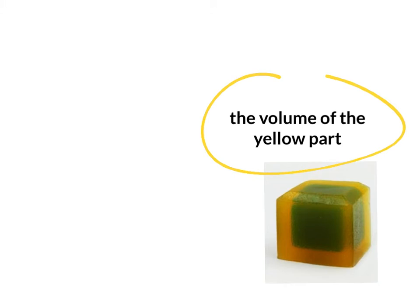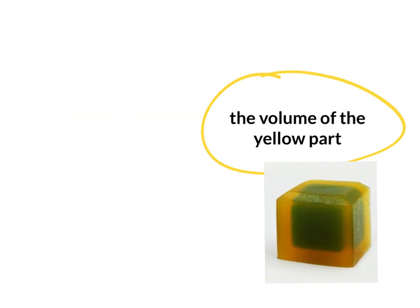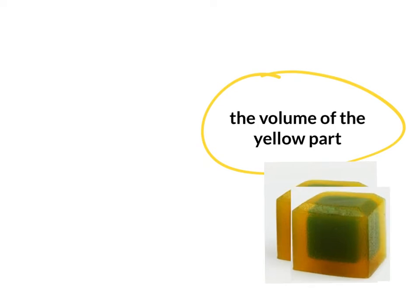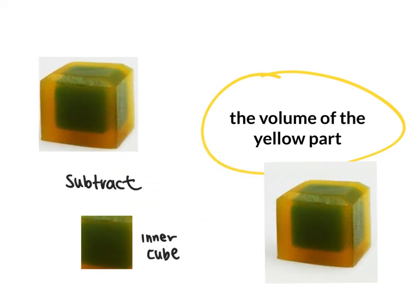To get only this yellow part, which is kind of like an empty picture frame without the picture, an easy way is to take this entire cube and subtract that inner piece so that you just get this outside volume left over.